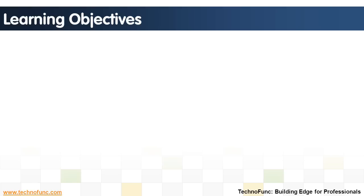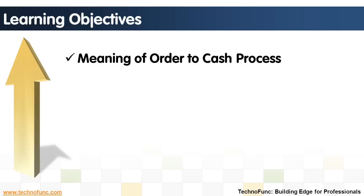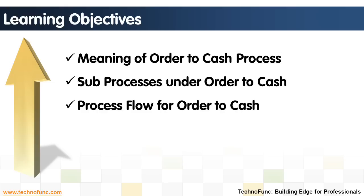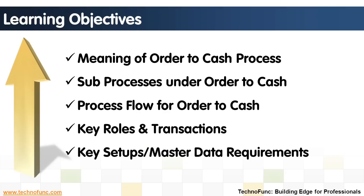Learning objectives for this lesson are: the meaning of the OrderToCash process, sub-processes under OrderToCash, process flow for OrderToCash, key roles and transactions, and key setups and master data requirements.